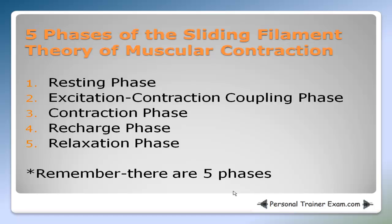For the sliding filament theory of muscular contraction, there are five phases. The first phase is the resting phase. The second phase is the excitation-contraction coupling phase. The third phase is the contraction phase. The fourth phase is the recharge phase, and the final, fifth phase is the relaxation phase.